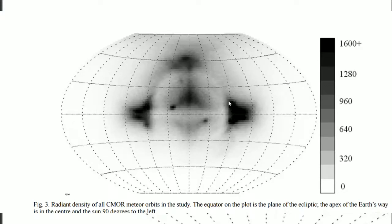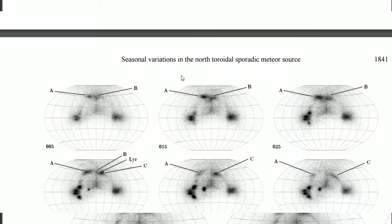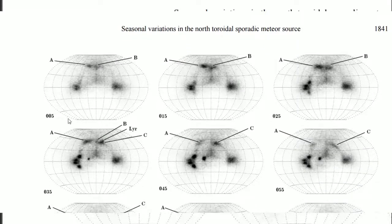And then there's one on the sides. They call this one the helion and the antihelion, and this one the toroidal.